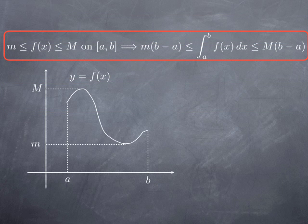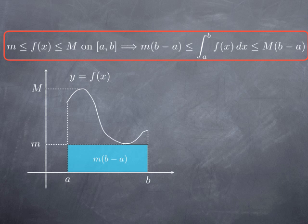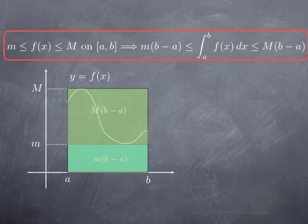Let me dwell a little bit on the geometric interpretation of this observation. If f is a continuous function on a closed interval, then for m and M I can take the absolute minimum and absolute maximum of the function on the interval, which we know exists under the assumption of continuity. The lower bound of the integral is m times (b minus a) — geometrically this is a rectangle with height m and base (b minus a) along the x-axis. The upper bound is M times (b minus a), the area of the larger rectangle. The area under the graph of f is in between.